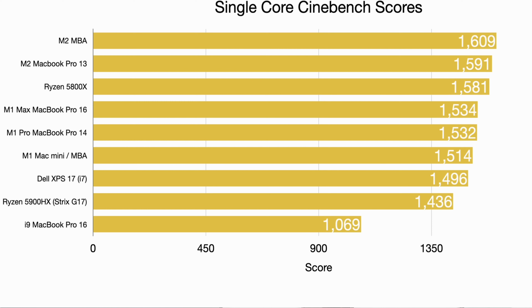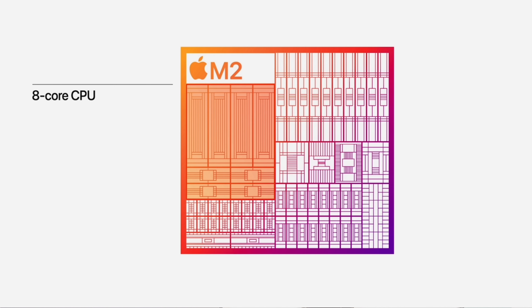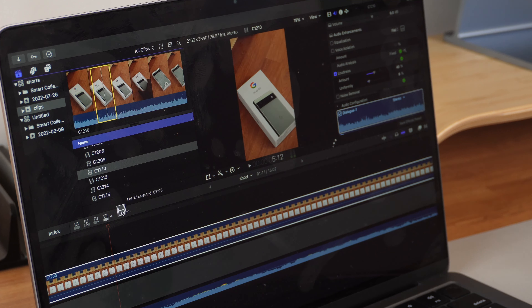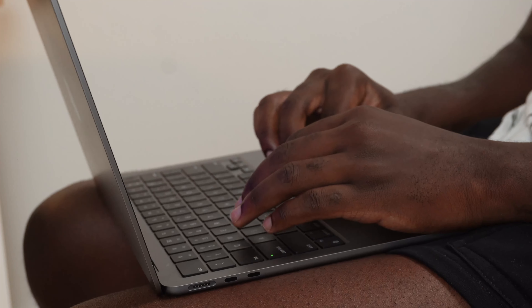For the last two weeks I have been using the M2 MacBook Air as my daily computer. I have used it to edit videos, write scripts, video calls, and basically use it to add more of my digital footprints into the world. This version of the M2 MacBook Air is the cheapest — the base model with 256 gigs of storage, 8 gigs of unified memory, an 8-core CPU and GPU, in space gray.